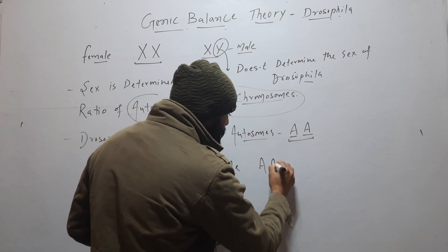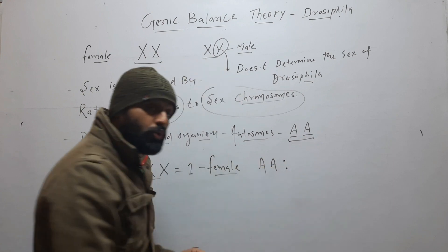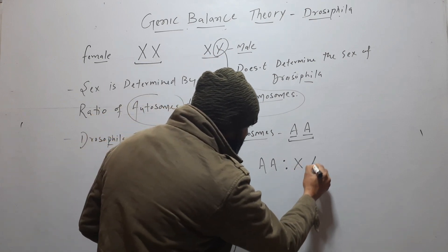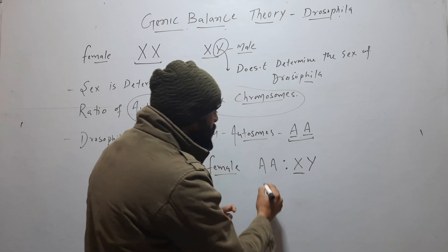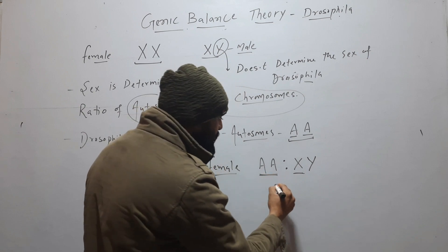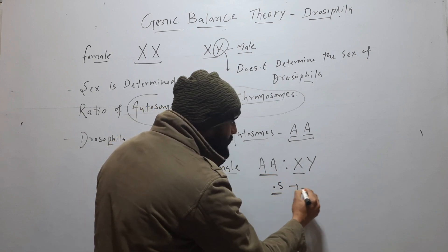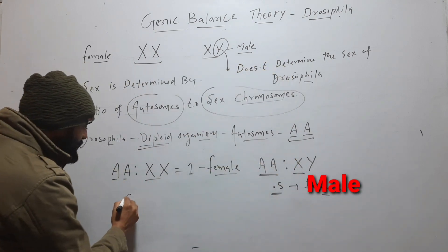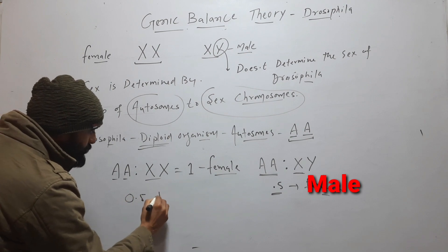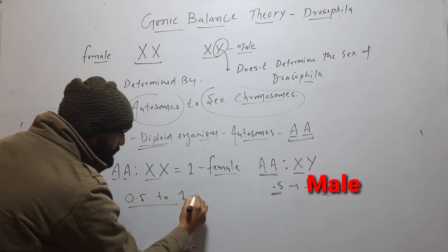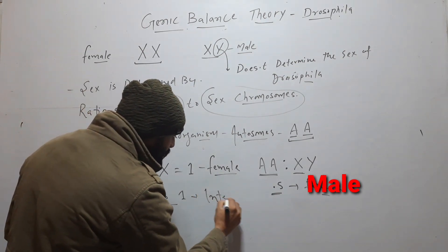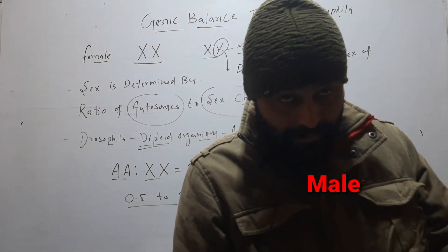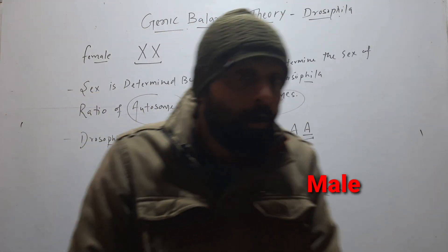When the ratio of autosome to the sex chromosome that is X, if it is X and Y, then the ratio of X to these autosomes is 0.5, then it will develop into male. And if ratio is between 0.5 to 1, then fruit fly will be intersex. It will be between male and female. It may have both characters, some characters of male and some of female.